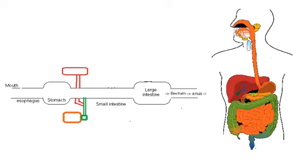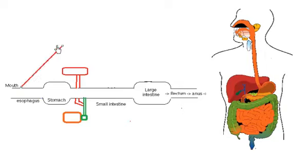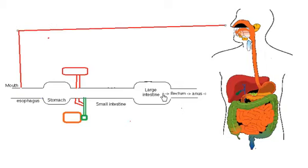In this video I will explain fat digestion, absorption, and delivery in the body. We're going to use this schematic diagram. Before I go to the explanation, let me explain what this is. This region represents the mouth over here.